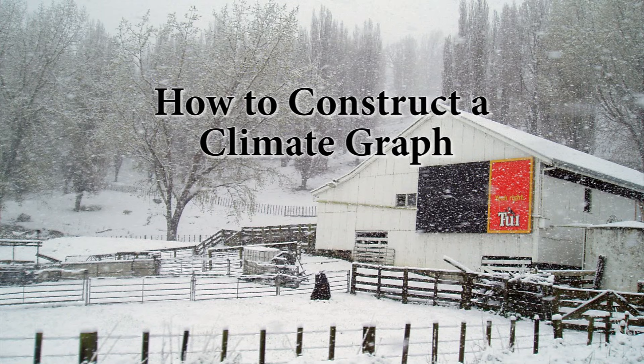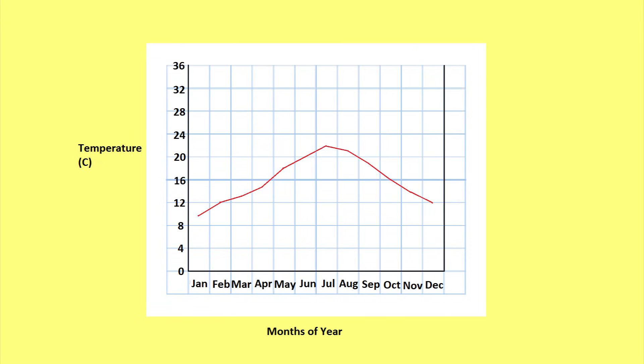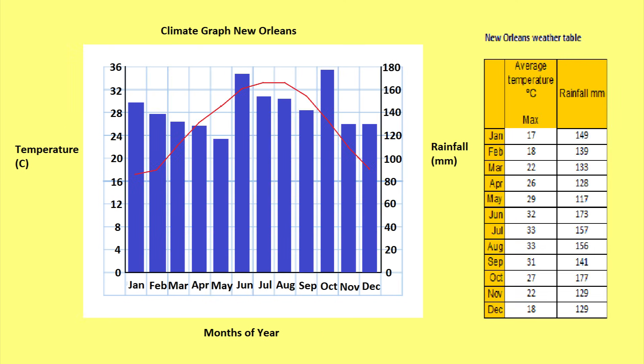Climate graphs are useful for identifying climate patterns in a location. They consist of a blue bar graph representing rainfall for each month of the year and a red line graph representing the temperature. By examining a climate graph you can identify the temperature range, the seasonal distribution of rainfall, and how much rainfall falls in a place.